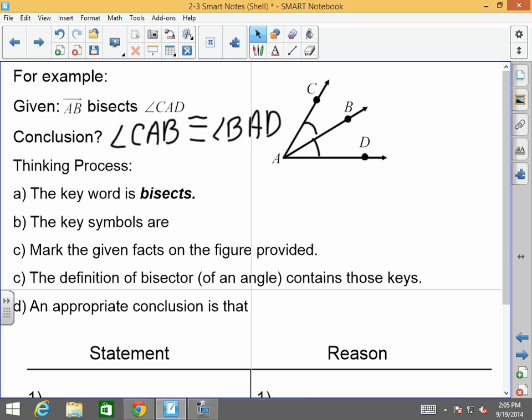So, automatically, that cuts angle CAD in half. So, boom, CAB has to be congruent to CAD. What are the key symbols here? The ray and the angle. Very good, gentlemen. Symbols are that ray symbol and that angle symbol. Mark the given facts on the figure. That's what I do immediately. We already marked them. And the definition of the bisector of an angle contains those keys. And an appropriate conclusion is, of course, that CAB is congruent to DAB, or BAD. Either way.